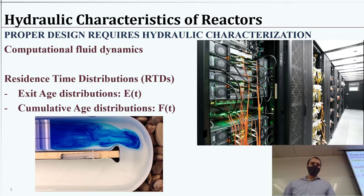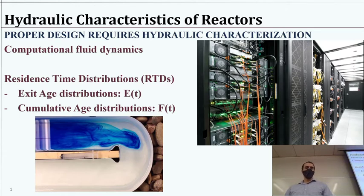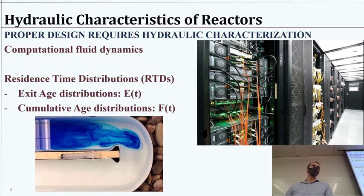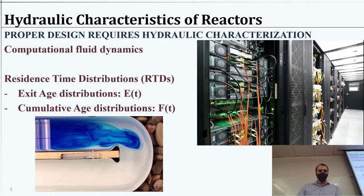So today I'd like to go through how do we characterize the hydraulics of these reactors. It's important whether we're dealing with an ideal reactor or a non-ideal reactor — we need to know what that flow looks like, what are our tools to understand that flow, and what we're going to do about that. Last time I briefly showed you this example of the dye flowing through the plug flow case, and we'll use that example again today.